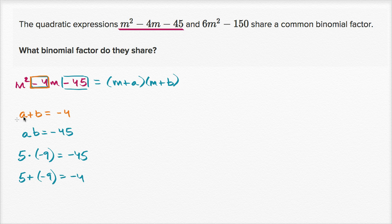So a could be equal to five and b could be equal to negative nine. And so if we were to factor this, this is going to be m plus five times m minus nine. So just like that, I've been able to factor this first quadratic expression as a product of two binomials.